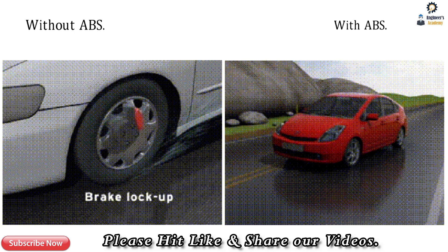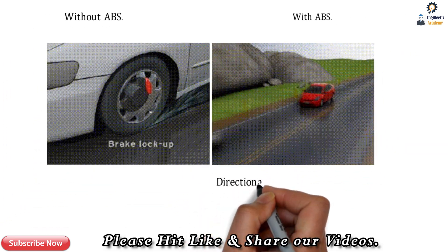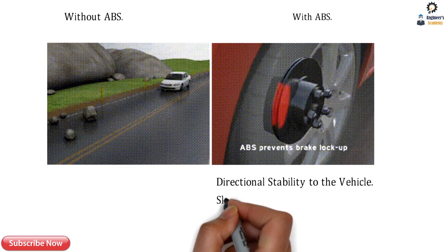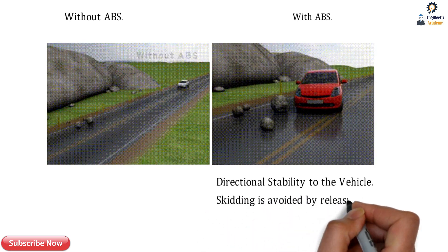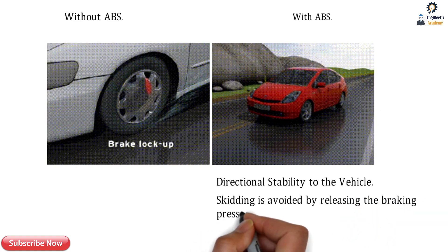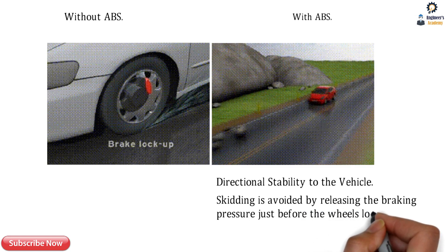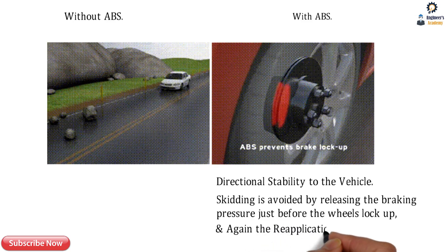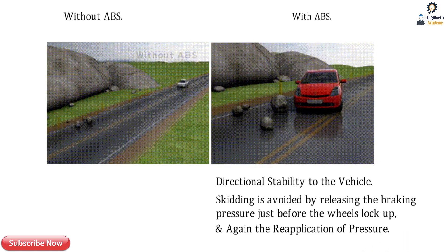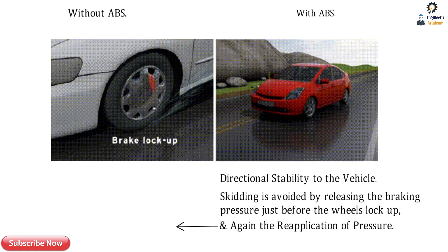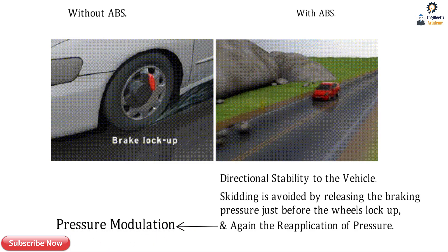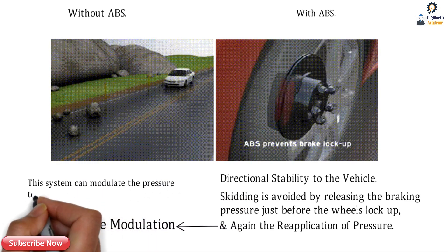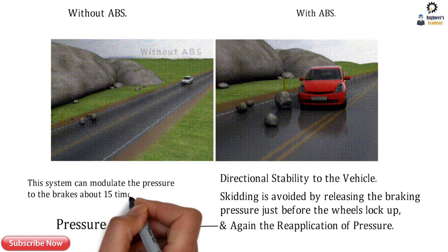With ABS, there are no chances of skidding and no chances of the vehicle deviating from its straight line. ABS provides directional stability to the vehicle. The skidding is avoided by releasing the braking pressure just before the wheel gets locked up. You can see this releasing and re-application of pressure to the wheel happening very fast — this process is known as pressure modulation.